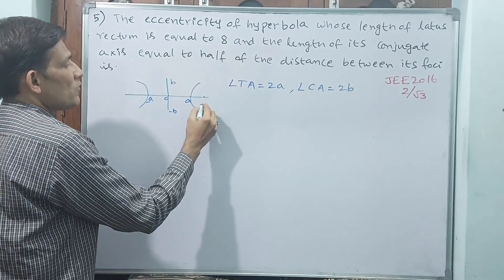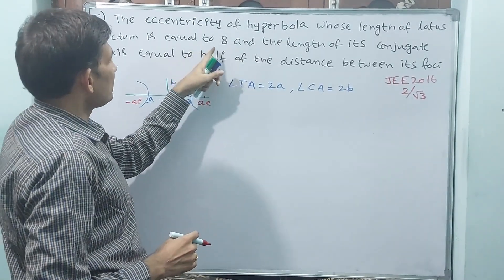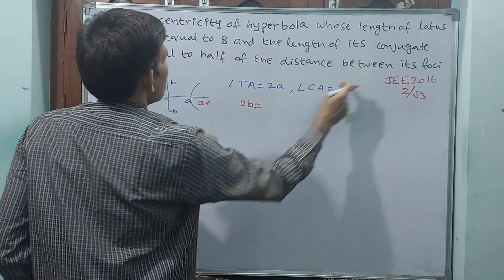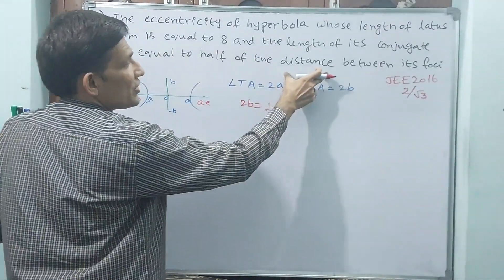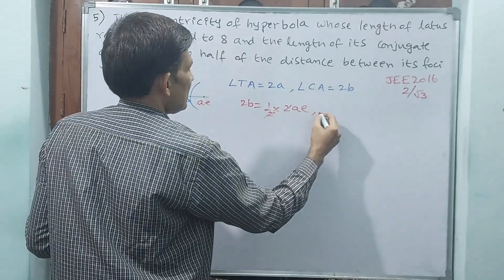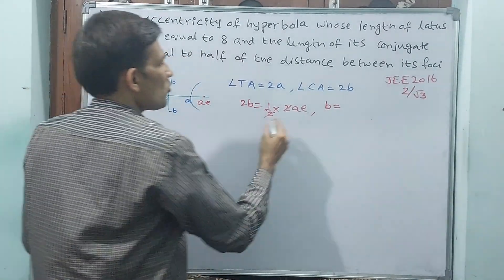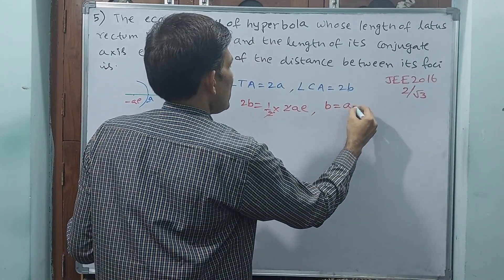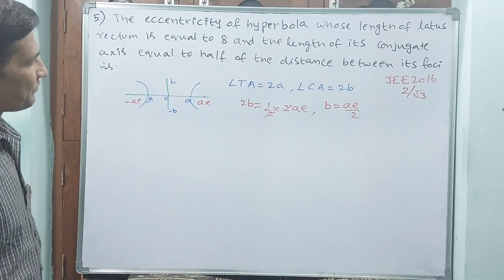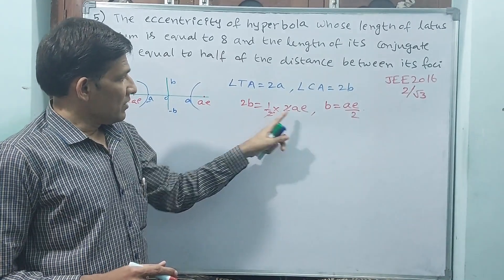Now, distance between foci. Foci are AE and minus AE. Second condition: length of conjugate axis 2B is equal to half of distance between foci. Distance between foci is 2AE, half of that. First of all, you cancel this. That means 2B is equal to AE. B is equal to AE by 2.